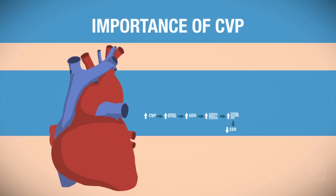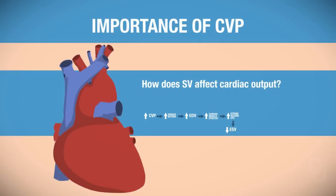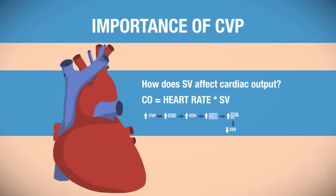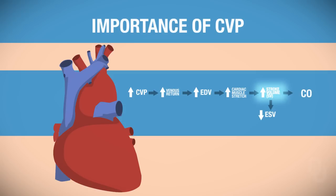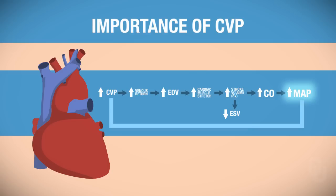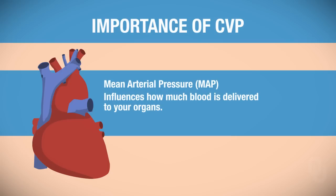Let's return to the stroke volume. The patient's stroke volume increased due to the increased central venous pressure. Cardiac output is equal to heart rate times stroke volume, so if stroke volume increases, so does cardiac output. This will also increase mean arterial pressure, which is the pressure in the aorta during one cardiac cycle. To recap, if we alter central venous pressure, that will indirectly influence mean arterial pressure, which influences how much blood is delivered to your organs.